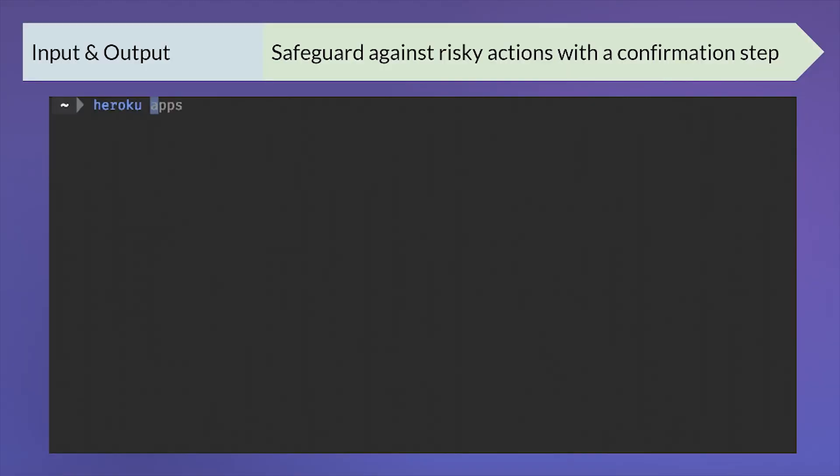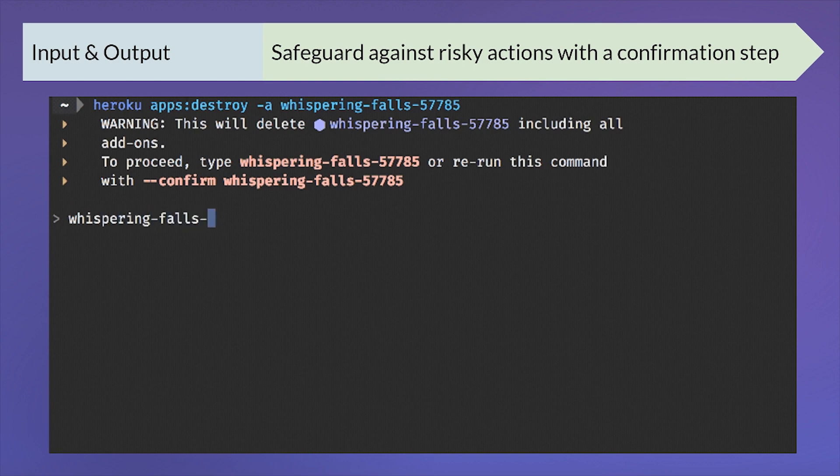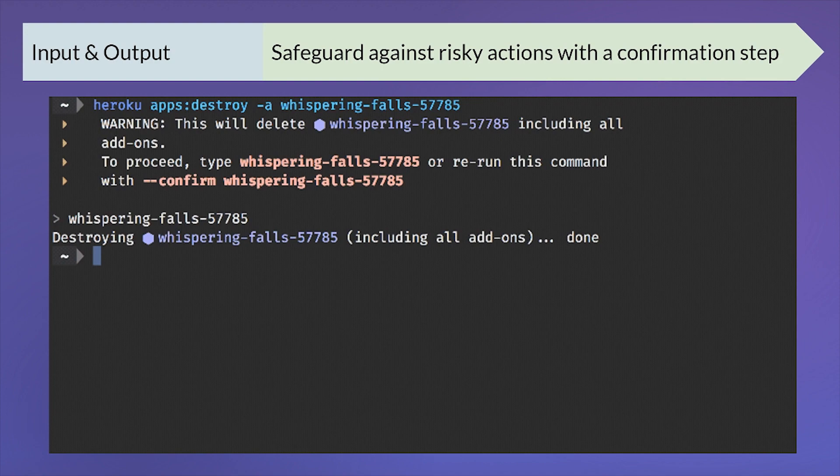Let's talk about safeguards against sophisticated actions. Every product has some actions a user can take that are pretty destructive — in our case, deleting your app or deleting your database. In a regular browser experience you'd get a pop-up asking 'are you sure you really want to do this?' How do you replicate that in the command line? When we determine something is a potentially risky action, such as deleting an app, we ask the user to confirm it. They can either enter the app name when prompted, or run the command with '--confirm' and the app name. That's consistent across our CLI — that little reminder makes the user think and ensures they're taking the action they want to take.